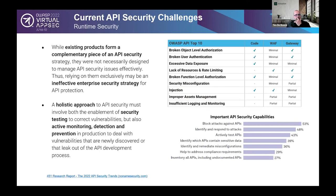The third frequently observed challenge is runtime security — protecting APIs from attacks. There is a misconception about what security controls can achieve today, driven by the awareness gap between the general OWASP Top 10 and the OWASP API Top 10. Many legacy controls are not well suited to deal with the vulnerabilities and attacks specific to the API Top 10.